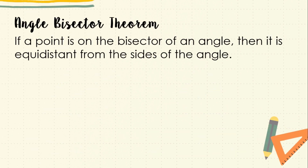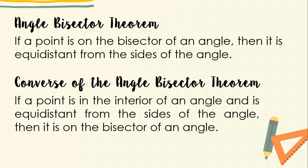The angle bisector theorem states that if a point is on the bisector of an angle, then it is equidistant from the sides of the angle. The converse of the angle bisector theorem states that if a point is in the interior of an angle and is equidistant from the sides of the angle, then it is on the bisector of that angle.